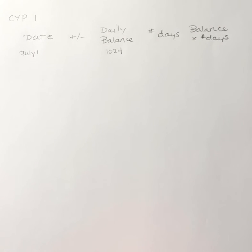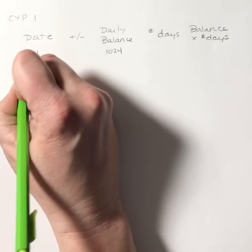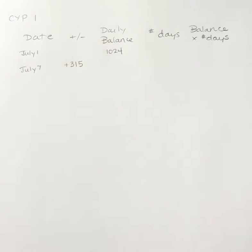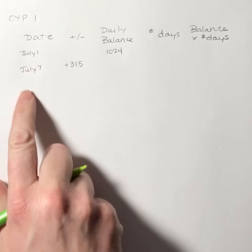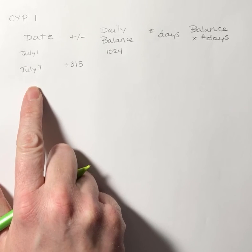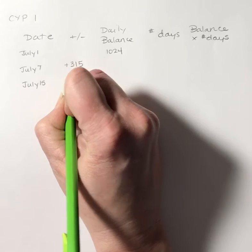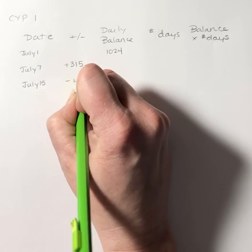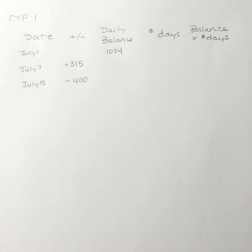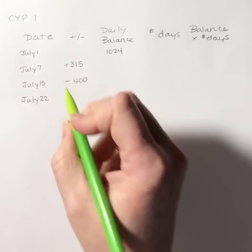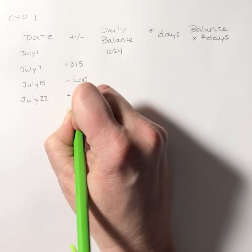Purchases of $315 were made on July 7th. I'm going to keep reading and do this in order. A payment of $400 was made on July 15th. Then back again on July 22nd, we made a charge of $410.